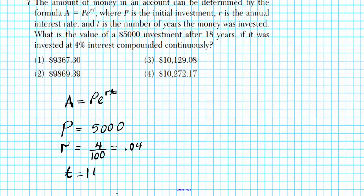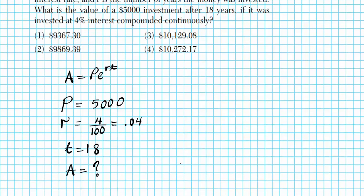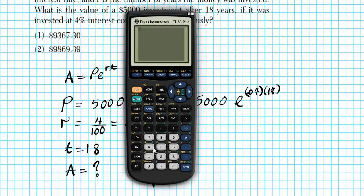So we have all the ingredients that we need to find the missing piece, which is a, the final amount. So a is unknown. Let's go ahead and calculate this. We're going to be using our calculators to finish this up momentarily, but let's set it up first. So a is equal to 5,000 times e to the 0.04 times 18. So you need to be able to make accurate use of your calculator in order to get this problem correct, or else it's easy to get this problem incorrectly due to input entry of your problem.